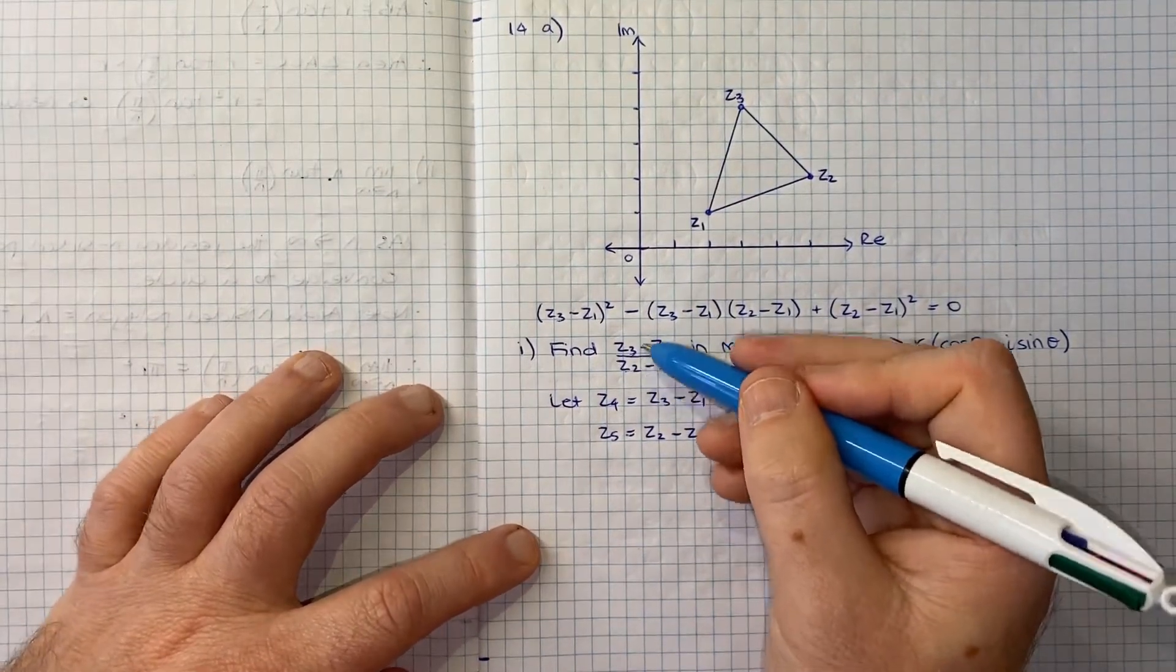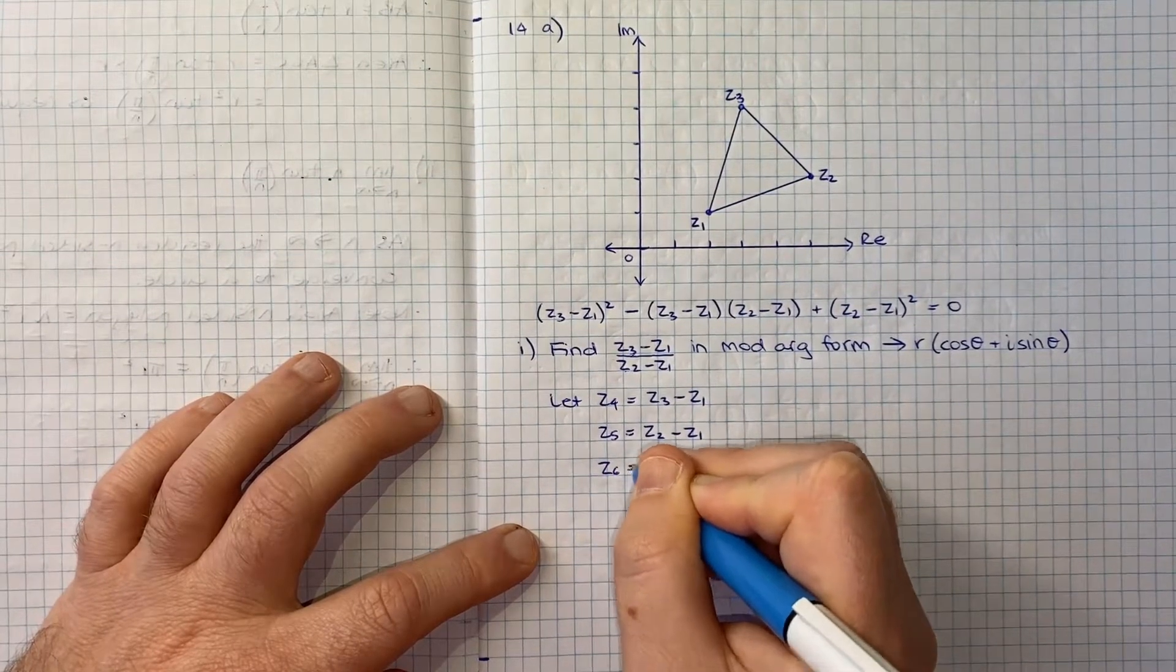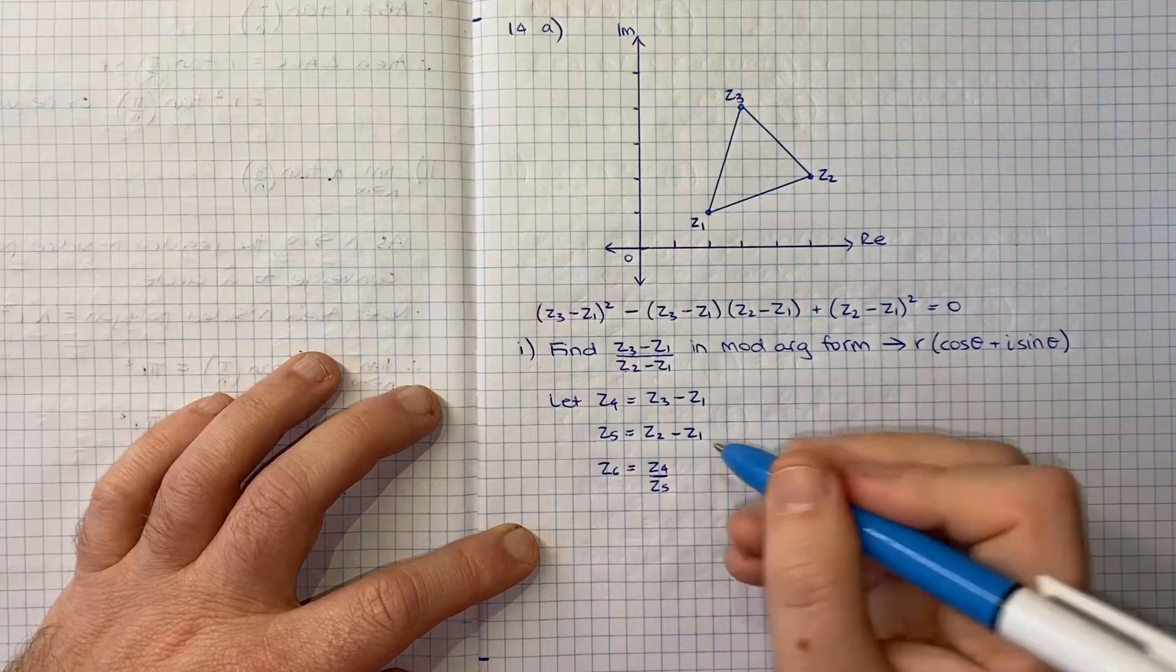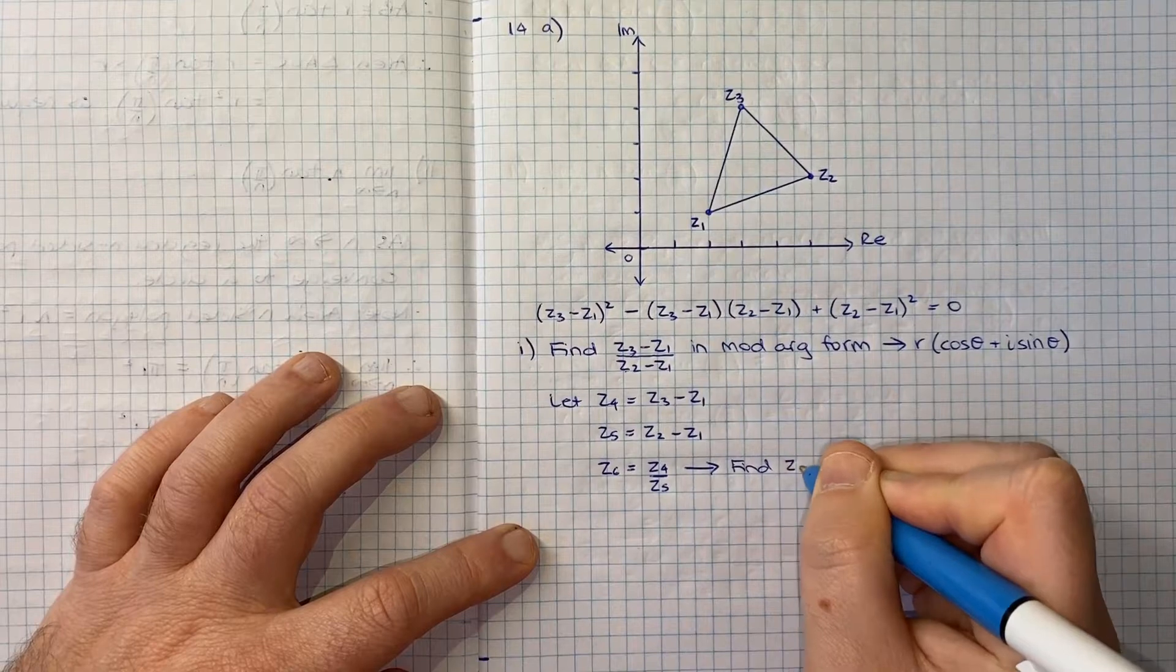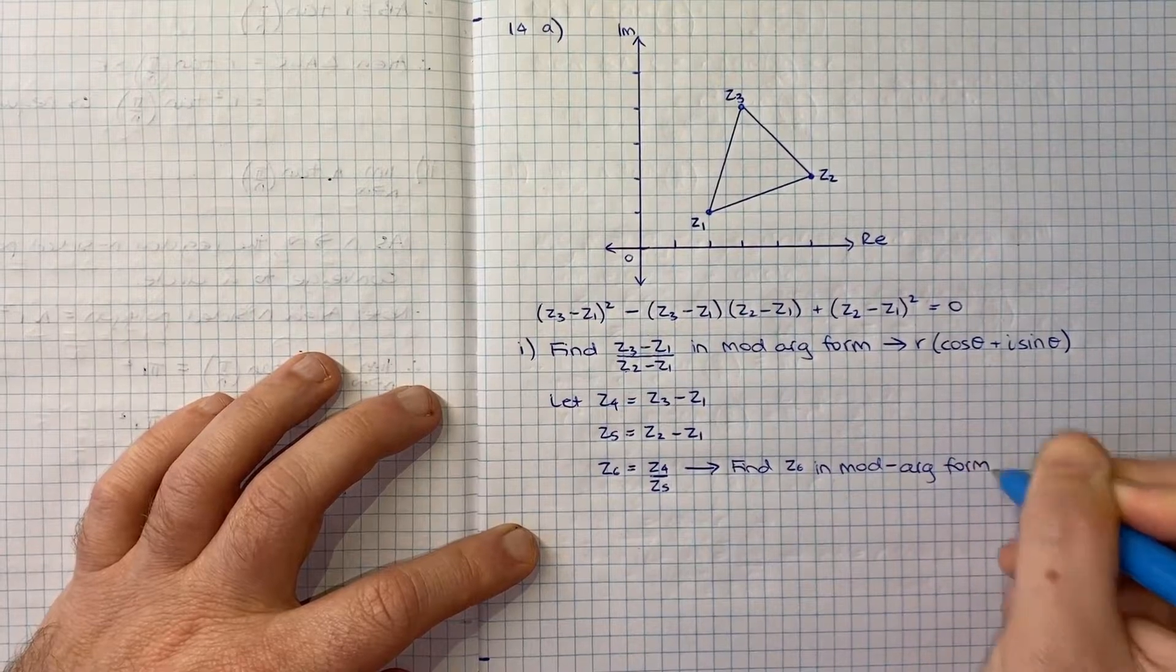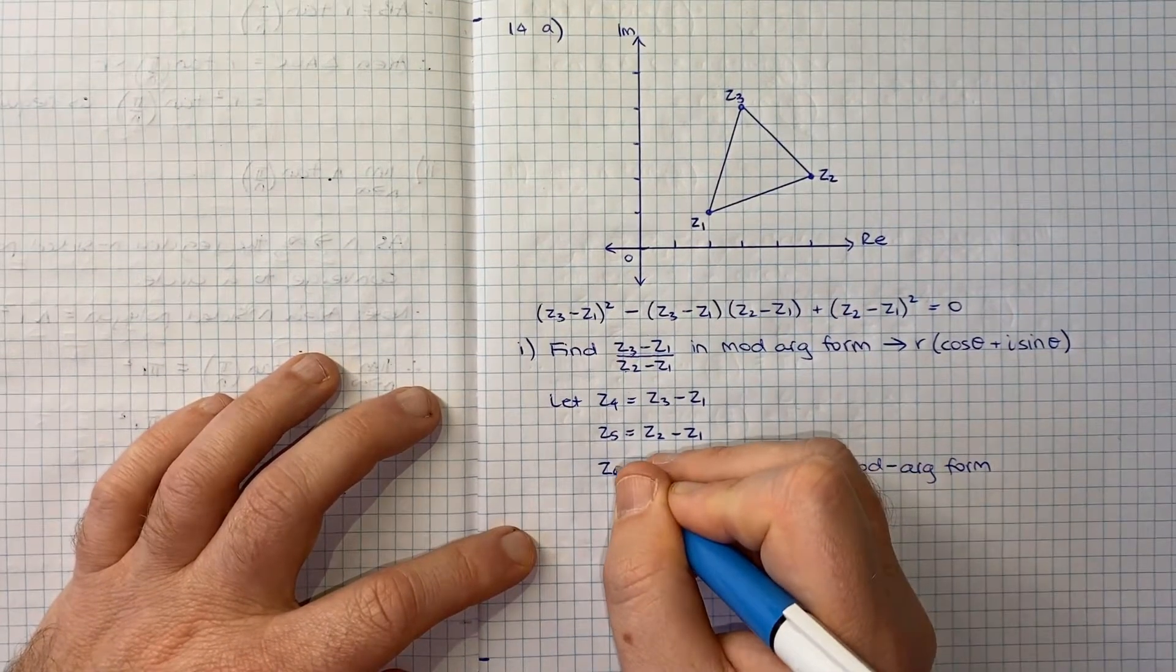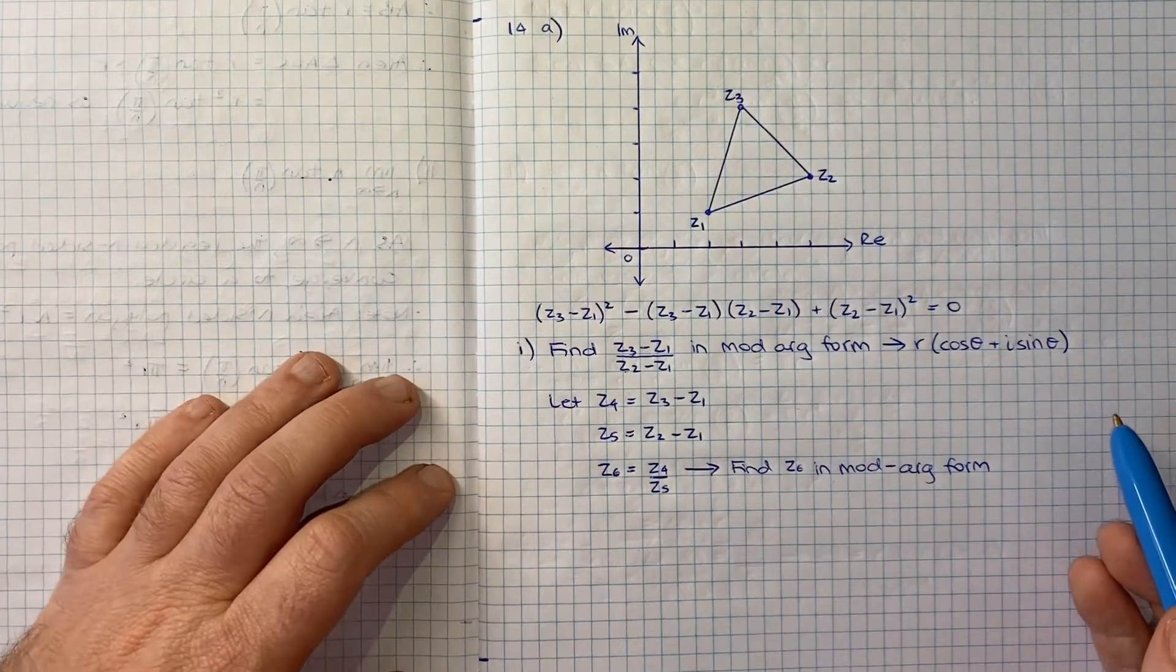Since we want the ratio between them, I might define Z6 to be that. So Z6 will equal Z4 over Z5. Really the question now becomes find Z6 in mod arg form. If we find Z6 in mod arg form, then we found Z3 minus Z1 over Z2 minus Z1.